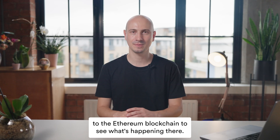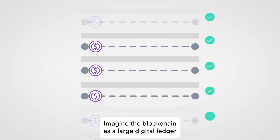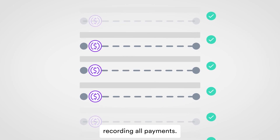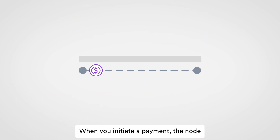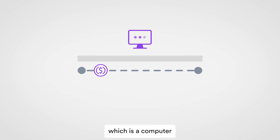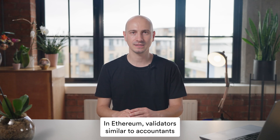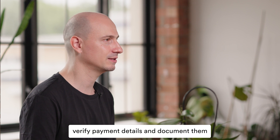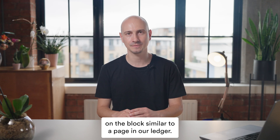Next, let's flick over to the Ethereum blockchain to see what's happening there. Imagine the blockchain as a large digital ledger recording all payments. When you initiate a payment, a node — which is a computer — processes your request much like a mailman handles your post. In Ethereum, validators, similar to accountants, verify payment details and document them on the block, similar to a page in our ledger.